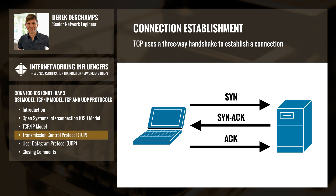Once the server is listening on a port, a TCP connection can be set up using a three-way handshake. A SYN is sent by the client to the server to request a connection, and to let the server know the initial sequence number it will use for the communication. The server responds back with a SYN-ACK to acknowledge receipt of the client's SYN. An ACK is then sent by the client back to the server to acknowledge the receipt of the server's SYN-ACK. Once this process is complete, a connection has been established and data can now be sent.